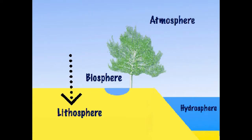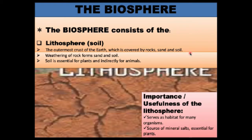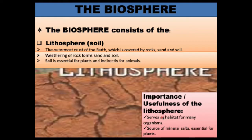The lithosphere is the outermost crust of the Earth, covered by rocks, sand, and soil. Weathering of rock forms sand and soil — that is, the breaking down of rock. The soil formed is very essential for plants and indirectly for animals as well. The lithosphere serves as a habitat for many organisms, including microorganisms like earthworms and bacteria, which all live in the soil.